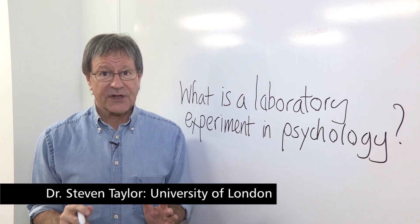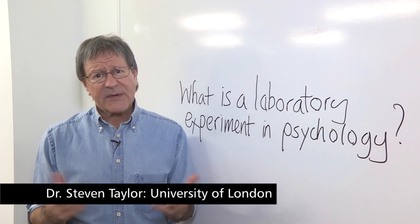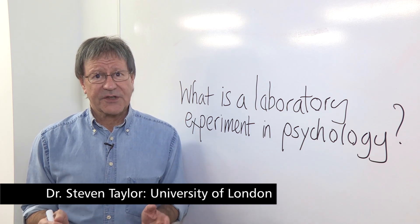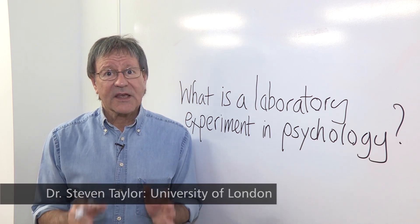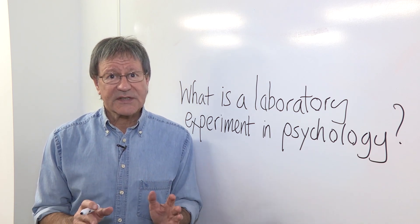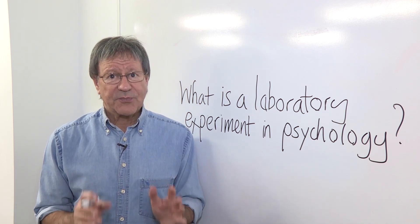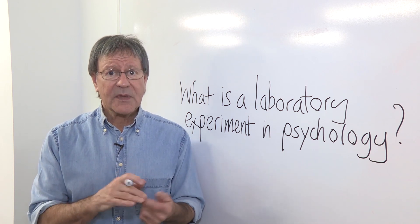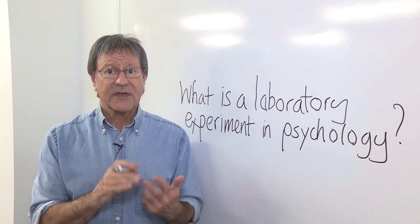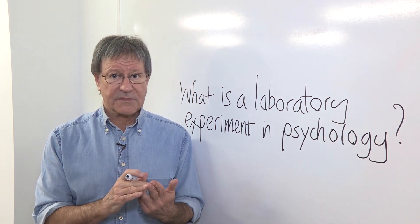Here we'll look at the key things you need to revise for a really good exam answer on experiments. And the first one is knowledge. Sure, it's okay to give a definition, but a much better way of gaining and showing understanding is to break the experiment down into aim, method, and environment.